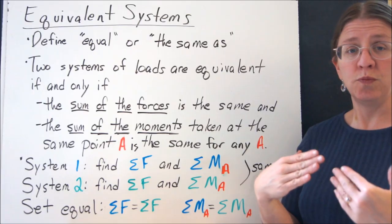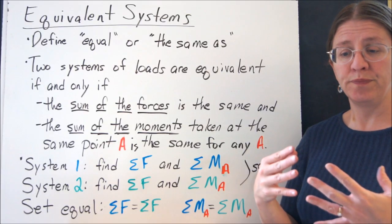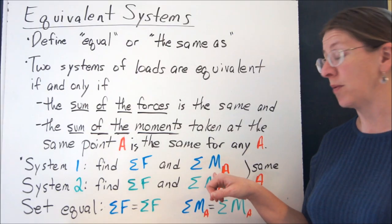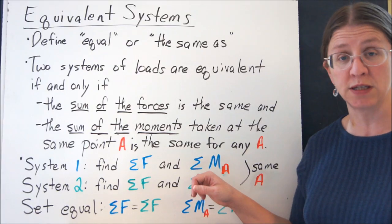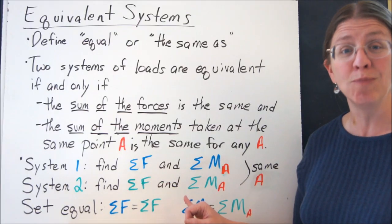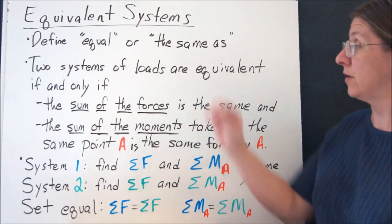The general steps for solving one of these problems is to find the sum of the forces and the sum of the moments at some point A that you've picked for system 1, find the sum of the forces and the sum of the moments at the same point A for system 2, and then set them equal to each other.